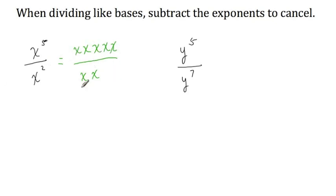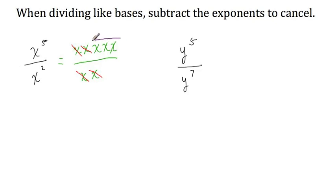Everything in the denominator are also factors. So we can cancel an x in the numerator with an x in the denominator, and an x in the numerator with an x in the denominator. So effectively, whenever we're dividing like bases, all we're doing is canceling just like we did here. This is not work that you actually want to show every time, because notice what the result is. After everything is canceled, we're left with x times x times x, or x to the third power.